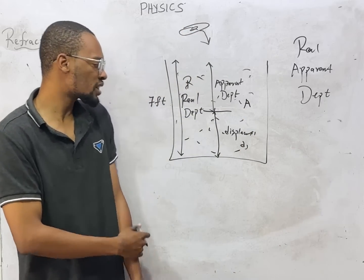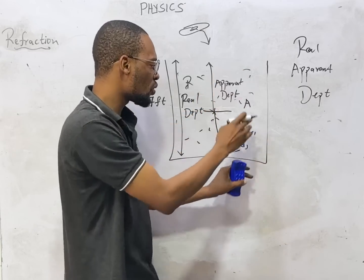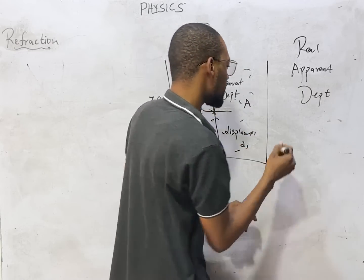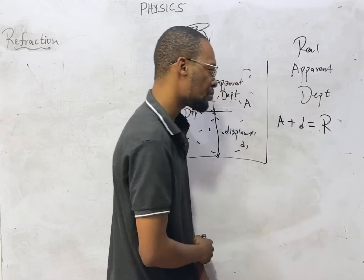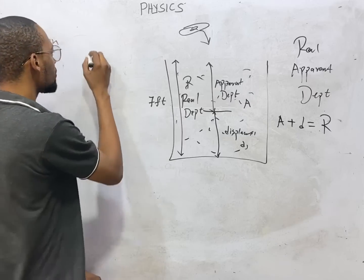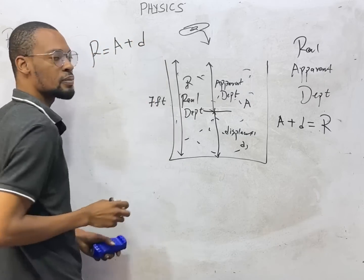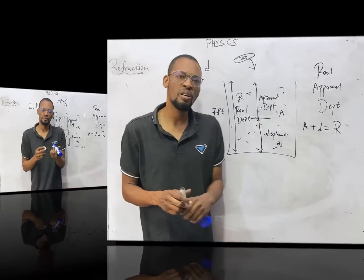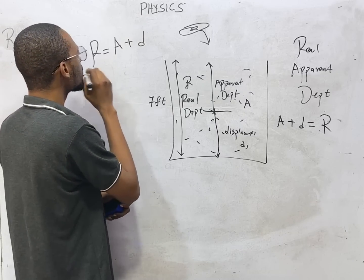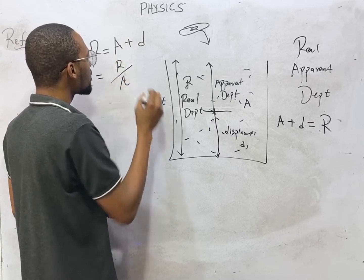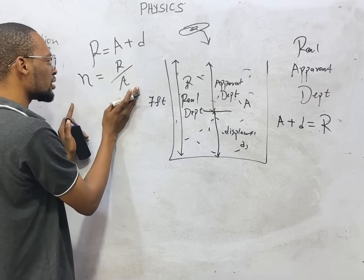From here, what can you figure out? If you add the apparent depth to the displacement, you are going to get the real depth. So: apparent depth plus displacement equals real depth. Therefore, the real depth equals apparent depth plus displacement.